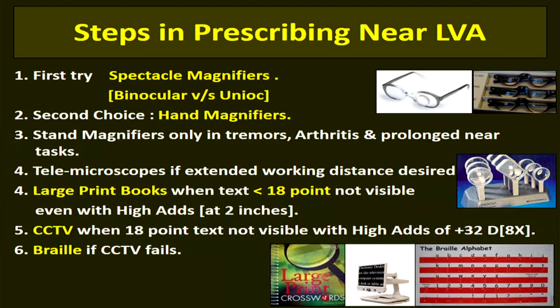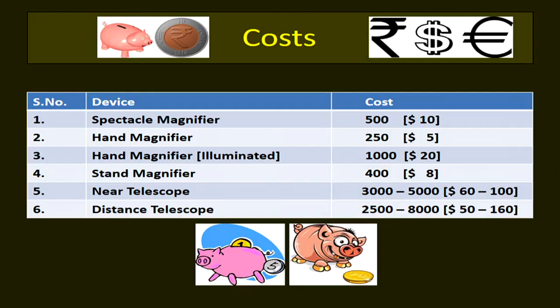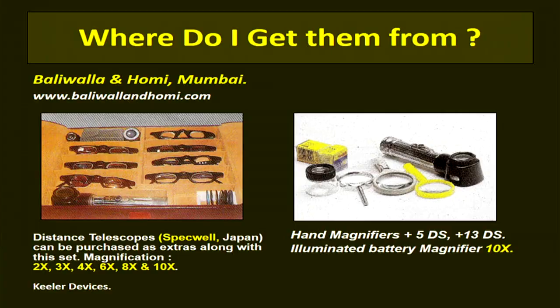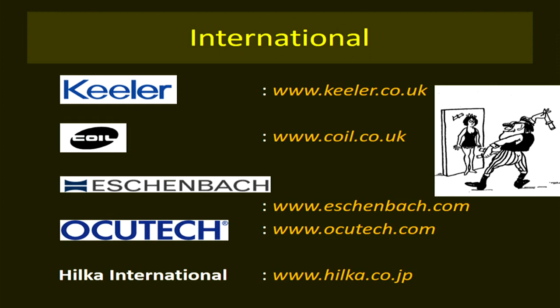Training is very essential. The cost of low vision devices in the Indian market: spectacle magnifiers cost about 500 rupees, while imported distant telescopes cost anywhere between 2,500 to 8,000 rupees. Sources for low vision devices include Baliwala and Homi — Homi produces testing kits and sells distance telescopes. Other sources include Madhu, Acreati OcuPlastic, Lenz Cell, and other vendors. International brands also available in India include Keeler, Coil, Eschenbach, and OcuTech.